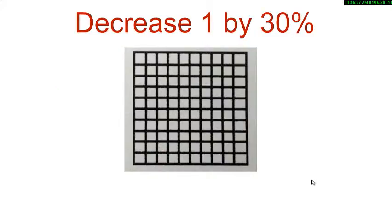Now, suppose we need to decrease 1 by 30%, then shade 1 whole 10 by 10 grid using 1 color and remove 30 squares using any other color to represent 30%.